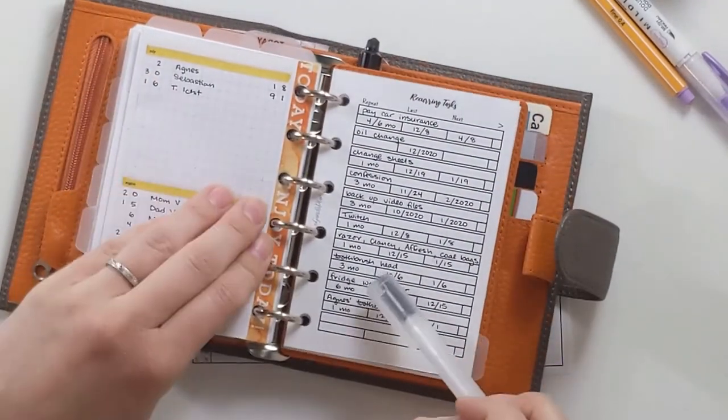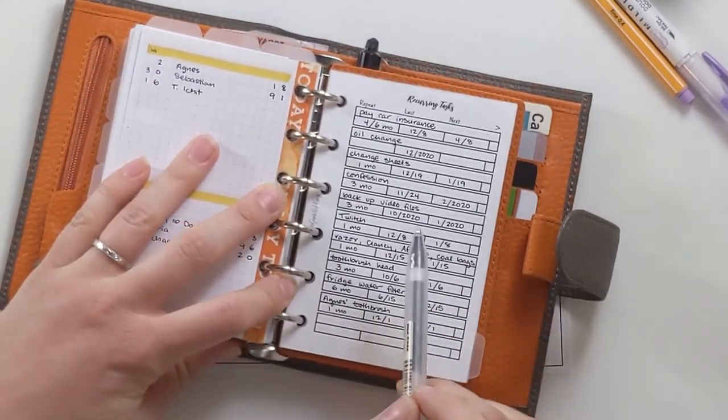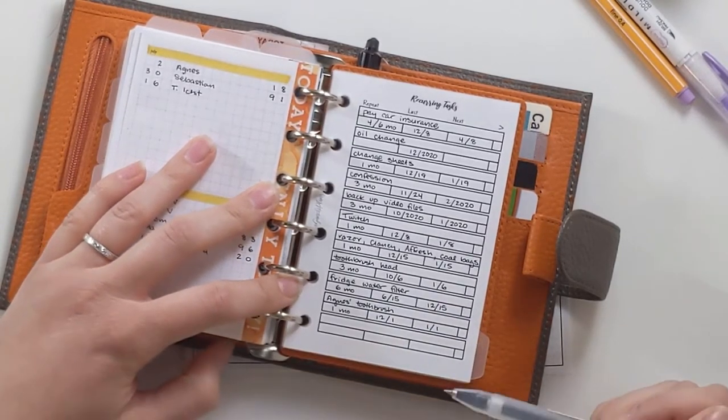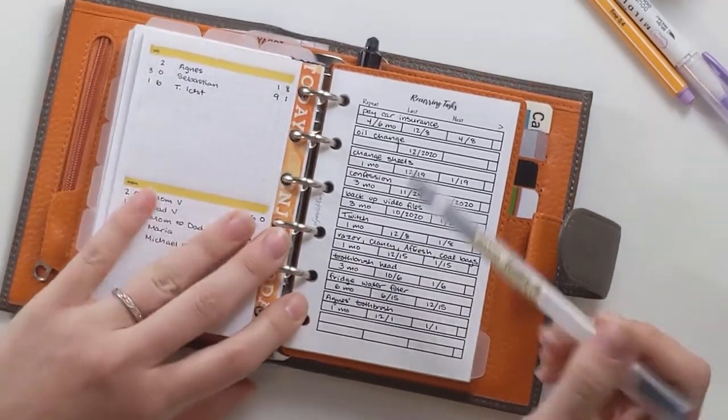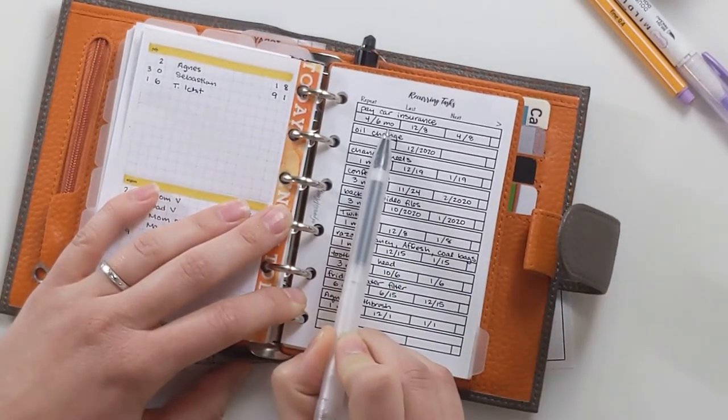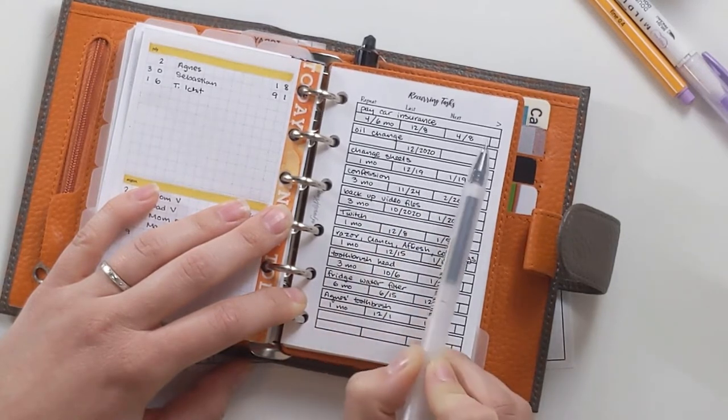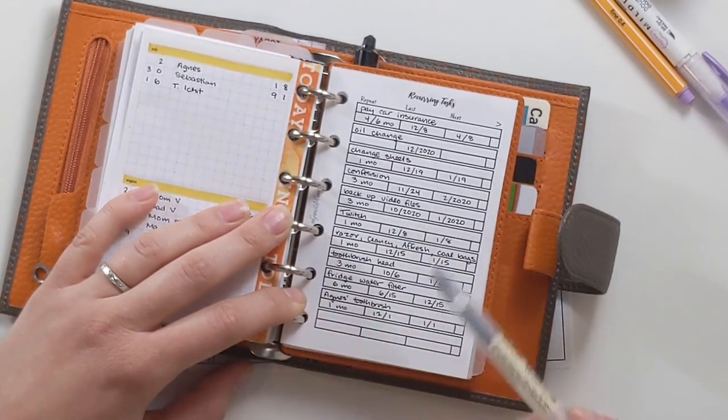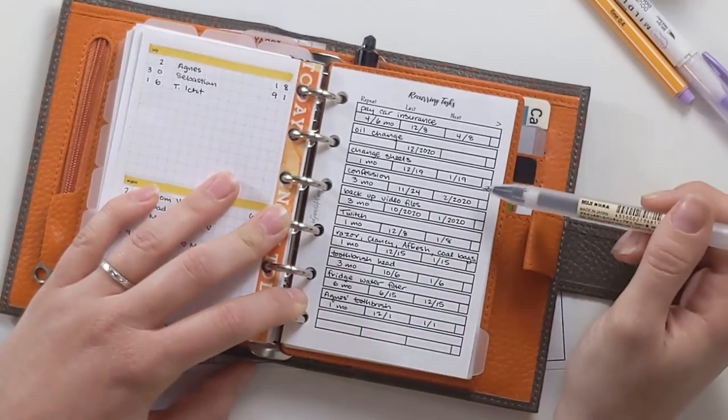Then the next insert from my shop is insert number 17. This is the reoccurring task list. And so this is different from what it was last year when I was using a Peanuts Planner Co. one that was always just a little bit messy. I'm hoping that this will at least keep things fresh. So the idea here is there's a line for each task and then columns here for how often you do the task, the last time you did it and the next time you did it. And then once that gets moved up to the next line, you put something in this column to mark that it's been transferred to another line and this is no longer applicable.